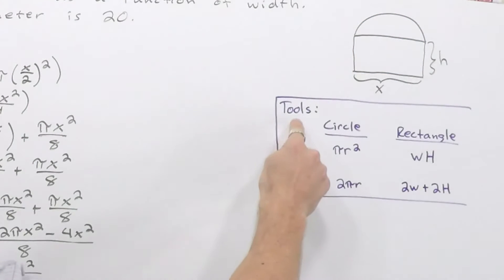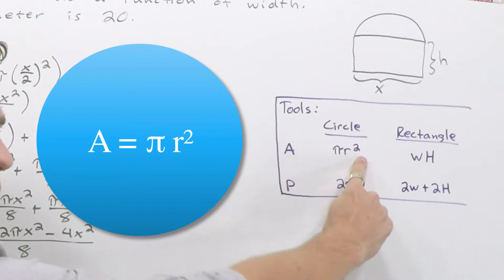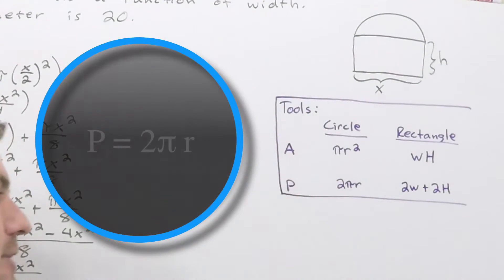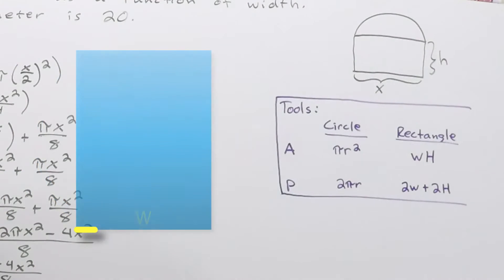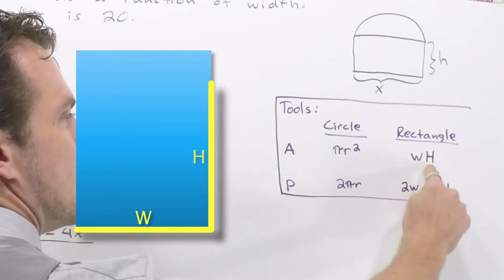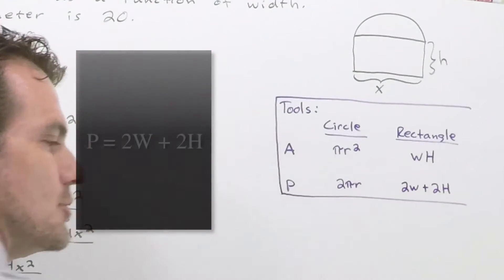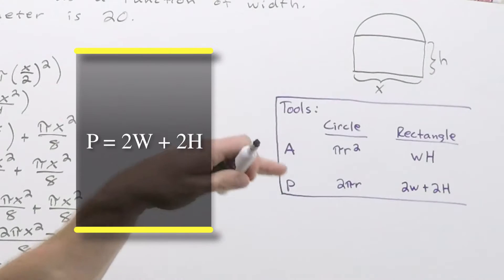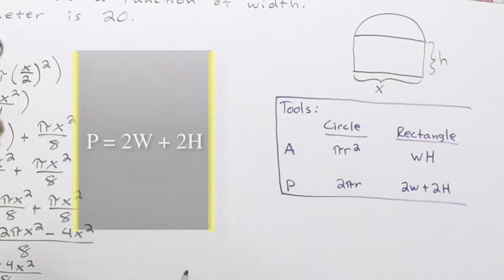If you look at our tools here, for a circle, the area is πr² and its perimeter or circumference all the way around is 2πr. And for the rectangle, area is width times the height, and the perimeter would be 2w + 2h, because you've got two widths, bottom and top, and you've got two heights, one on each side, and you add all of those together.